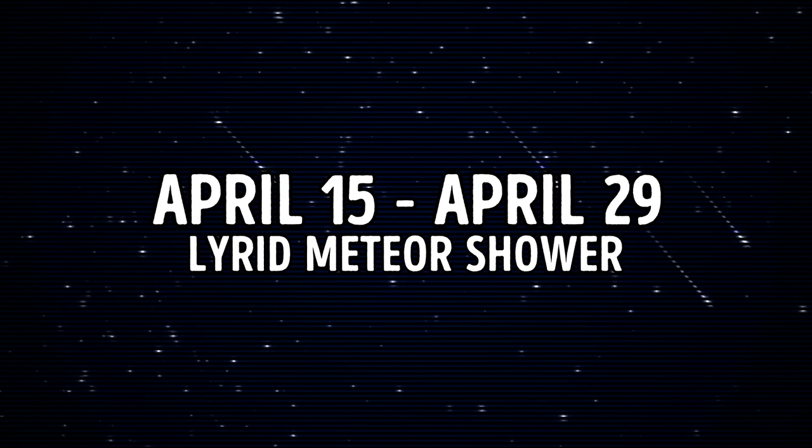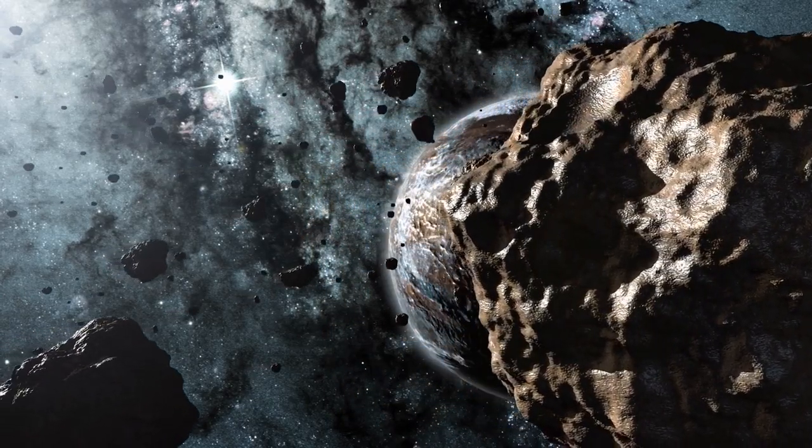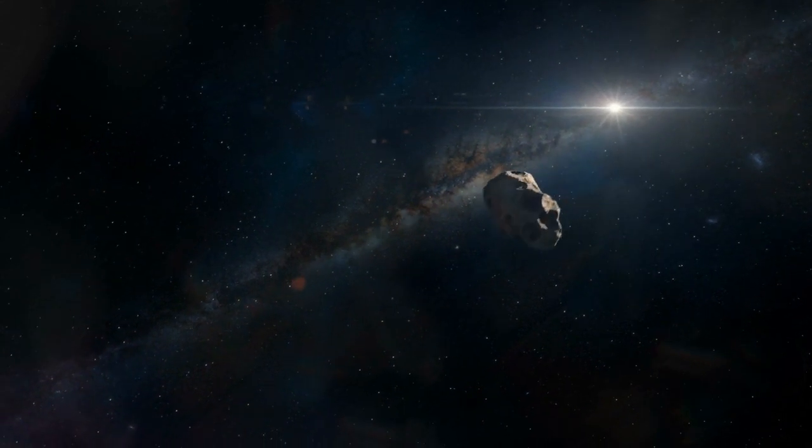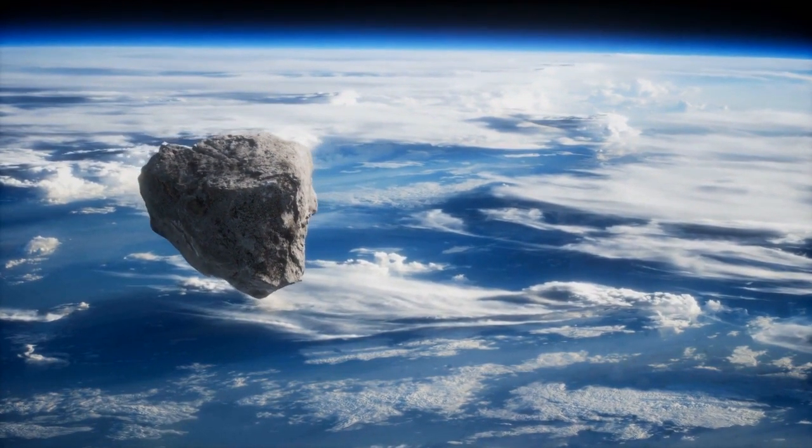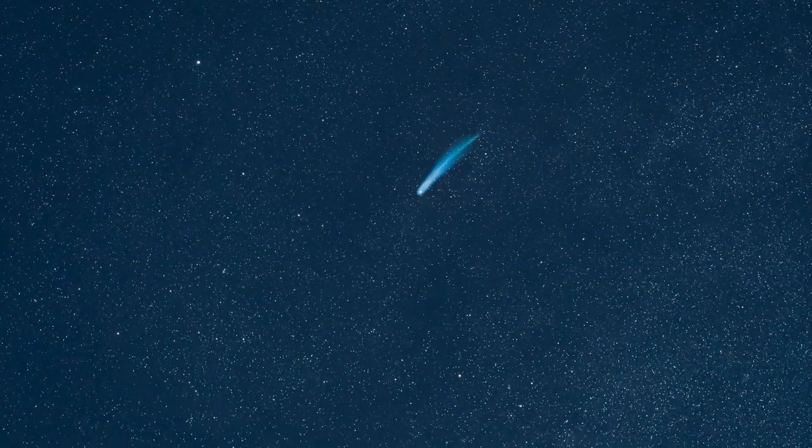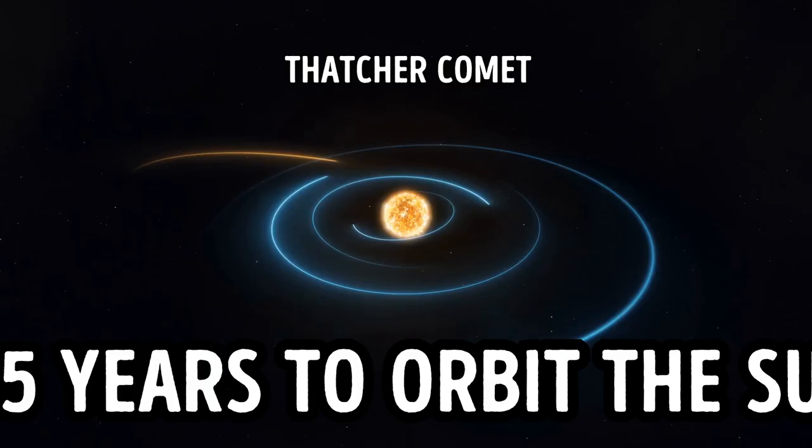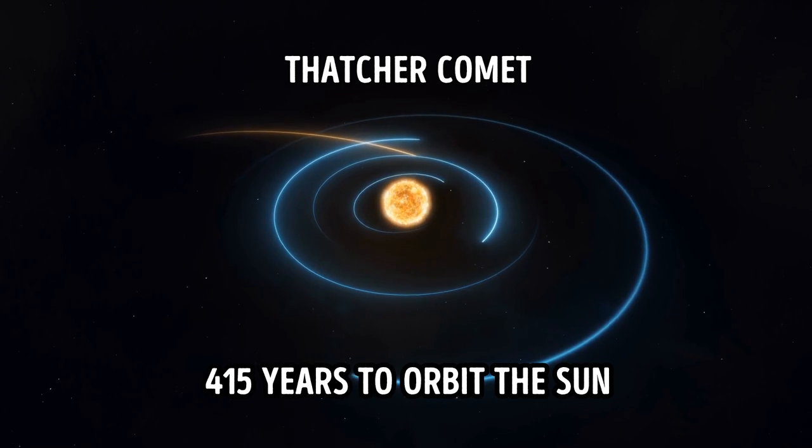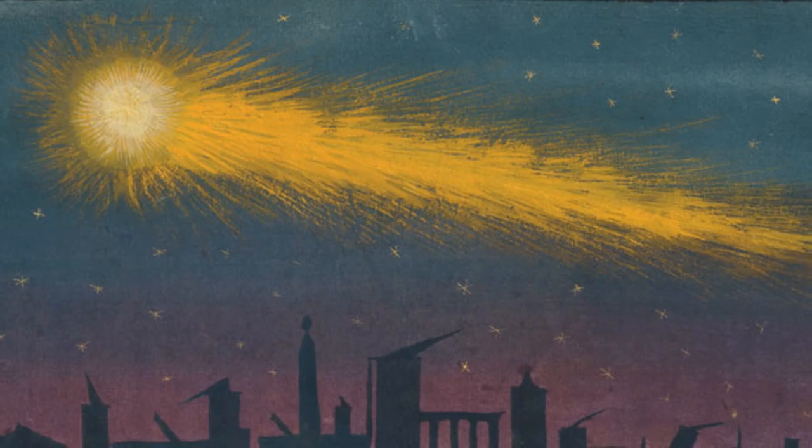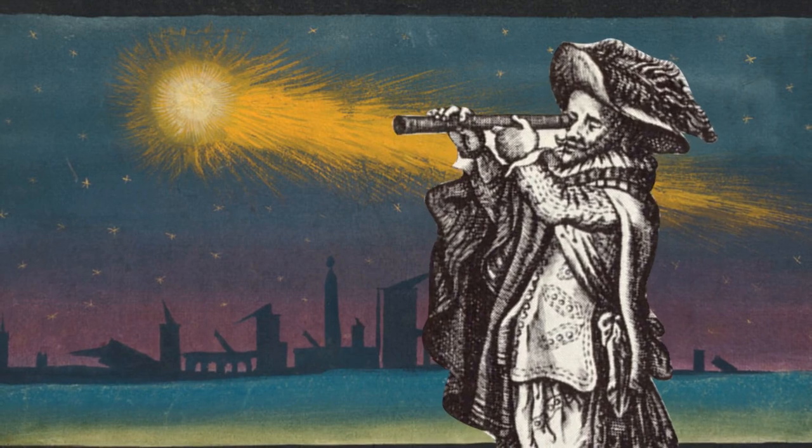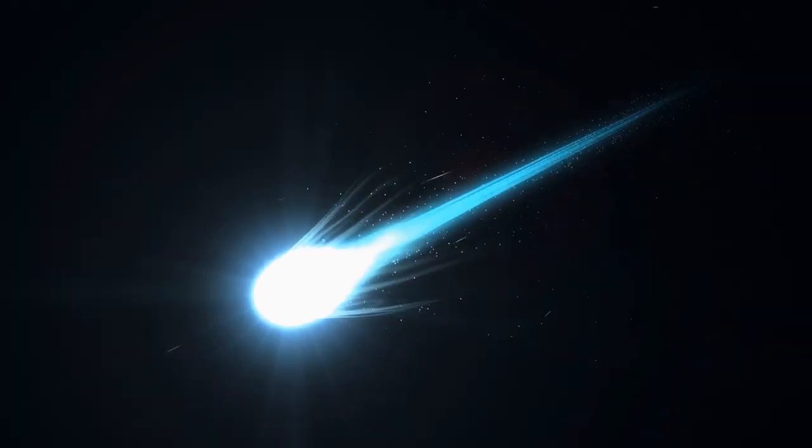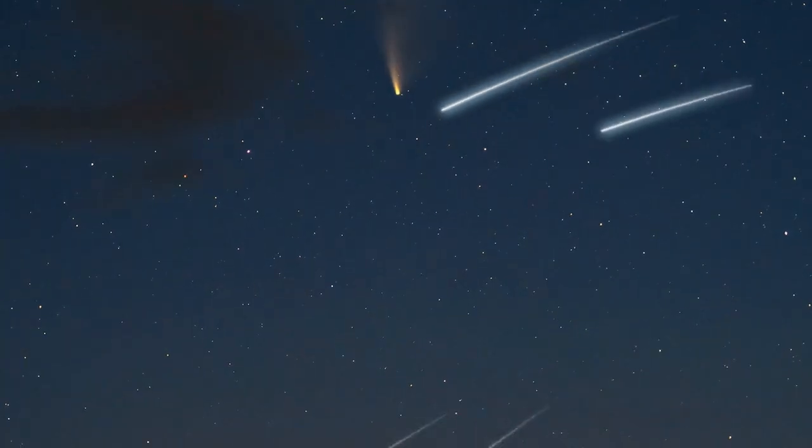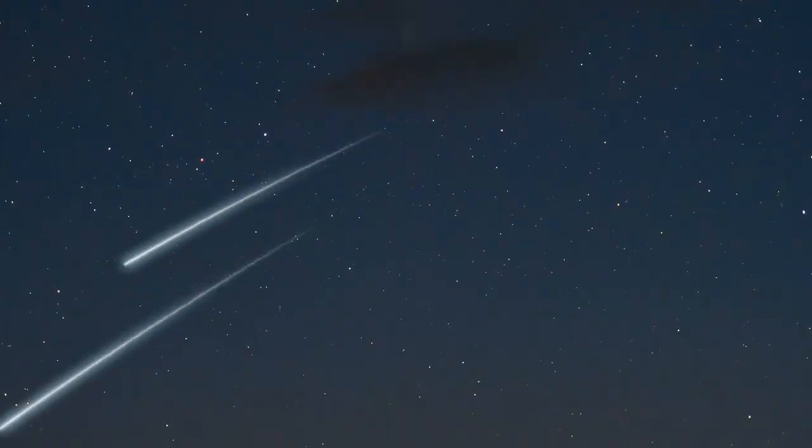From April 15th to April 29th, you'll be able to enjoy the Lyrid Meteor Shower. Meteor showers happen when our planet passes through debris left behind by comets and asteroids. The Lyrid Meteor Shower is produced by a comet called Thatcher. It takes around 415 years to orbit the sun. By the way, this meteor shower is one of the oldest. People started watching it in 687 BCE. This year, the peak of the meteor shower will fall on the night of April 22nd, with almost 20 meteors per hour dashing across the dark sky.